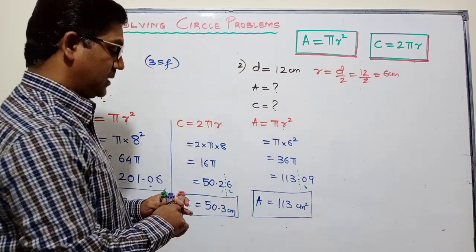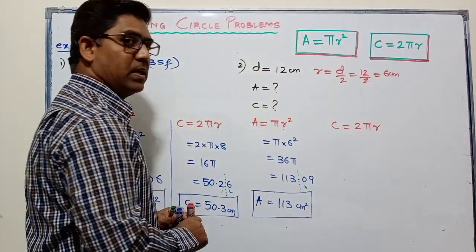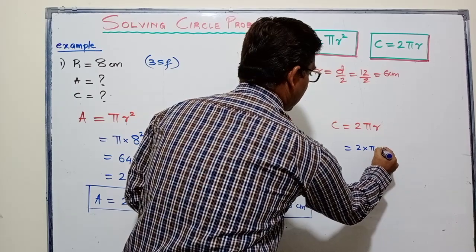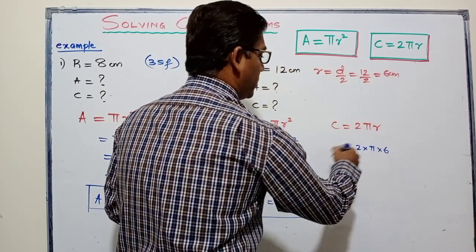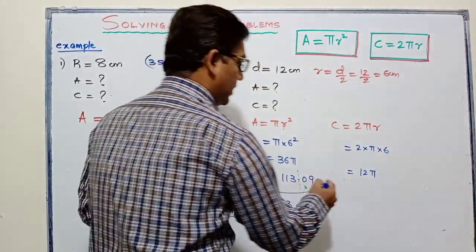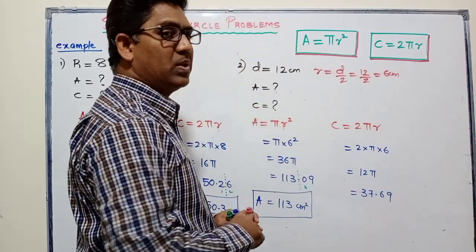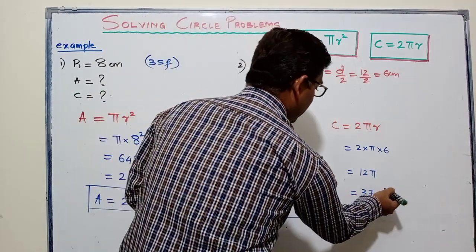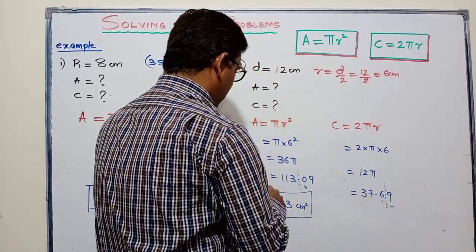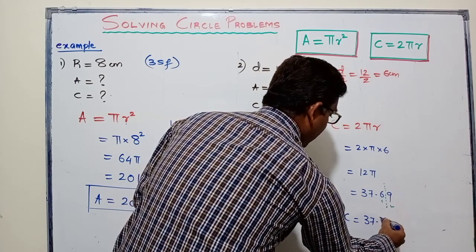Now let's find the circumference. The formula for circumference is 2πr. The value of r is 6, so we calculate 2 × π × 6 = 12π. Type this in the calculator and you get 37.69. We need to round to three significant figures, so we need only the first three digits. The fourth digit is 9, which is a strong digit, so we add one to the previous digit. The final answer is 37.7 cm.